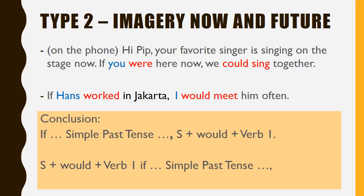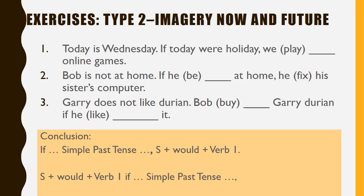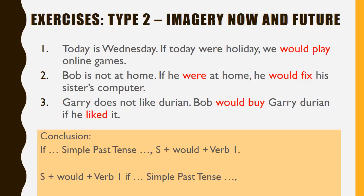Conclusion for Type 2: in these sentences we use simple past tense combined with would plus verb 1. Now do the exercises for Type 2 and then check your answers.